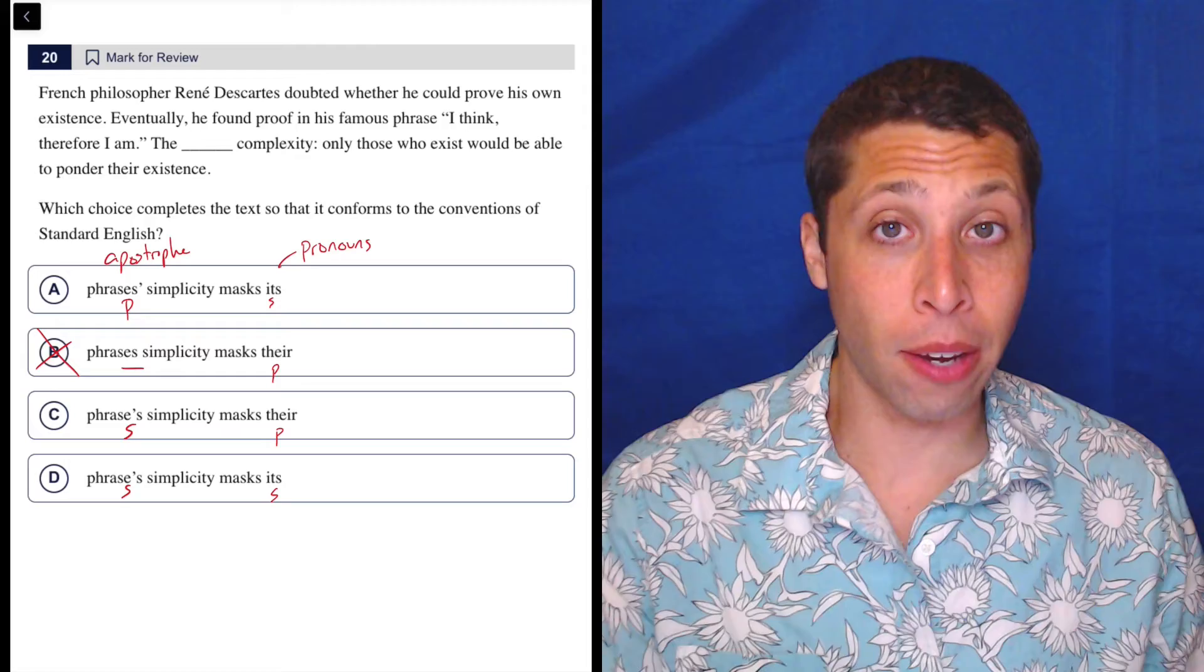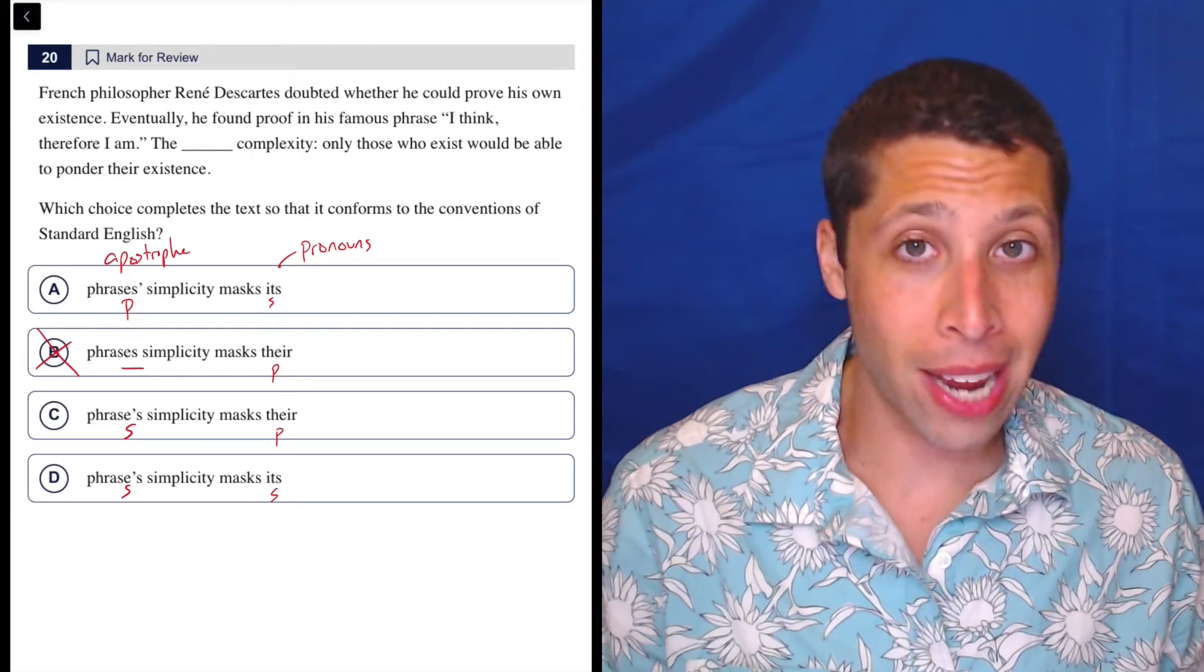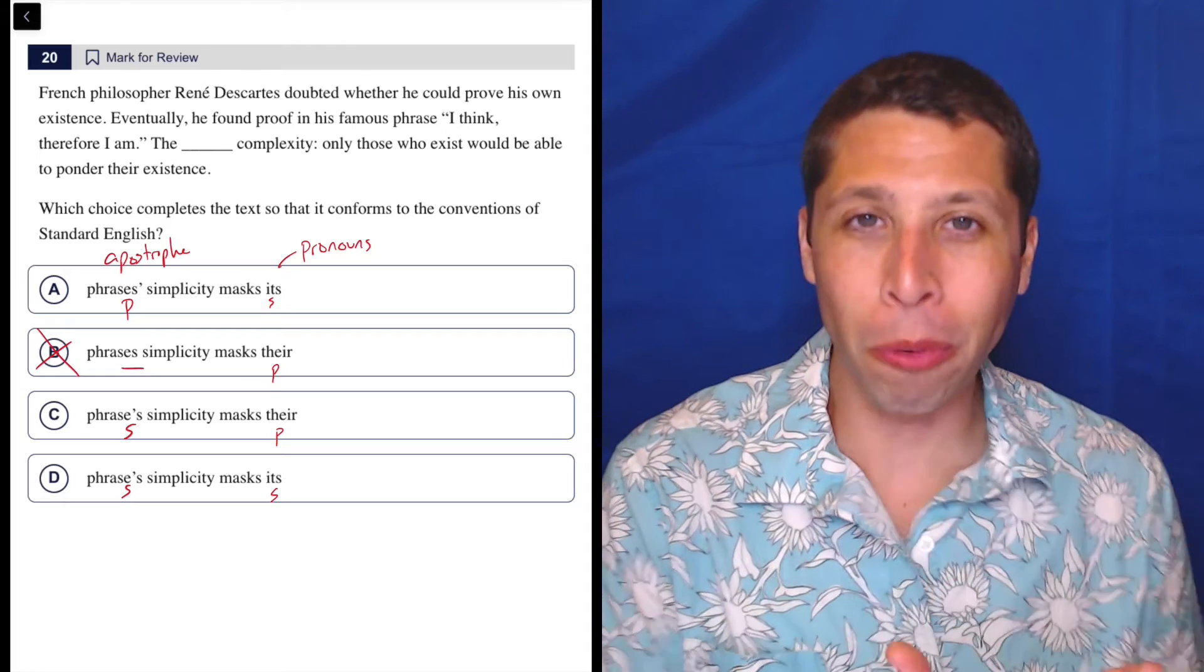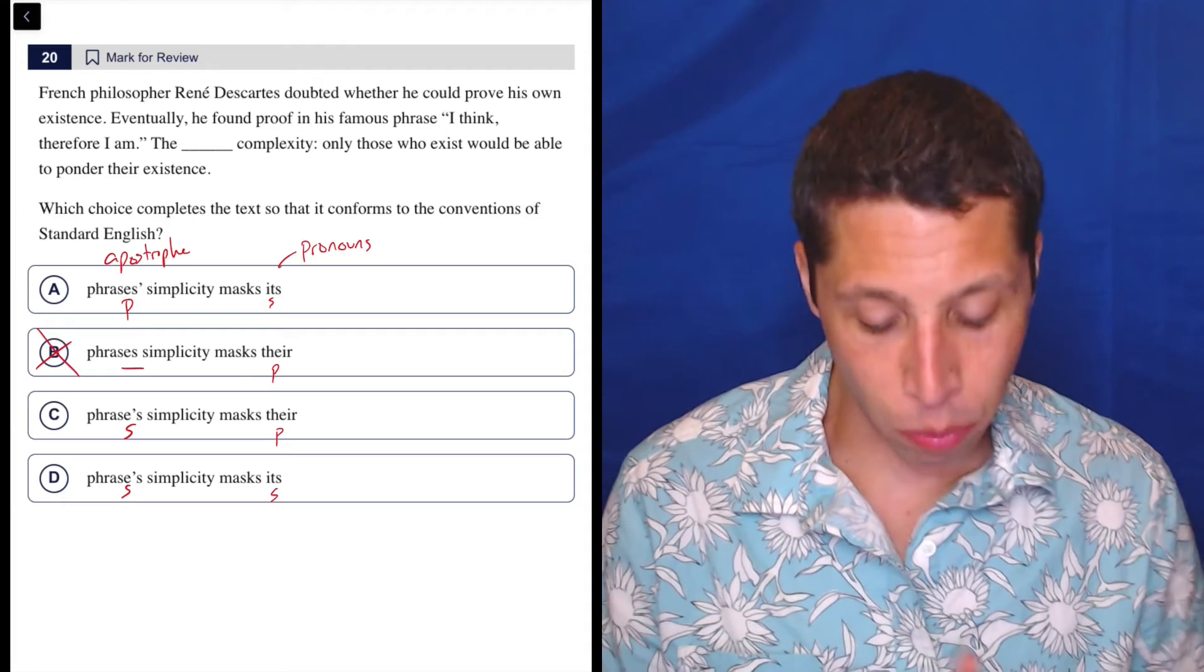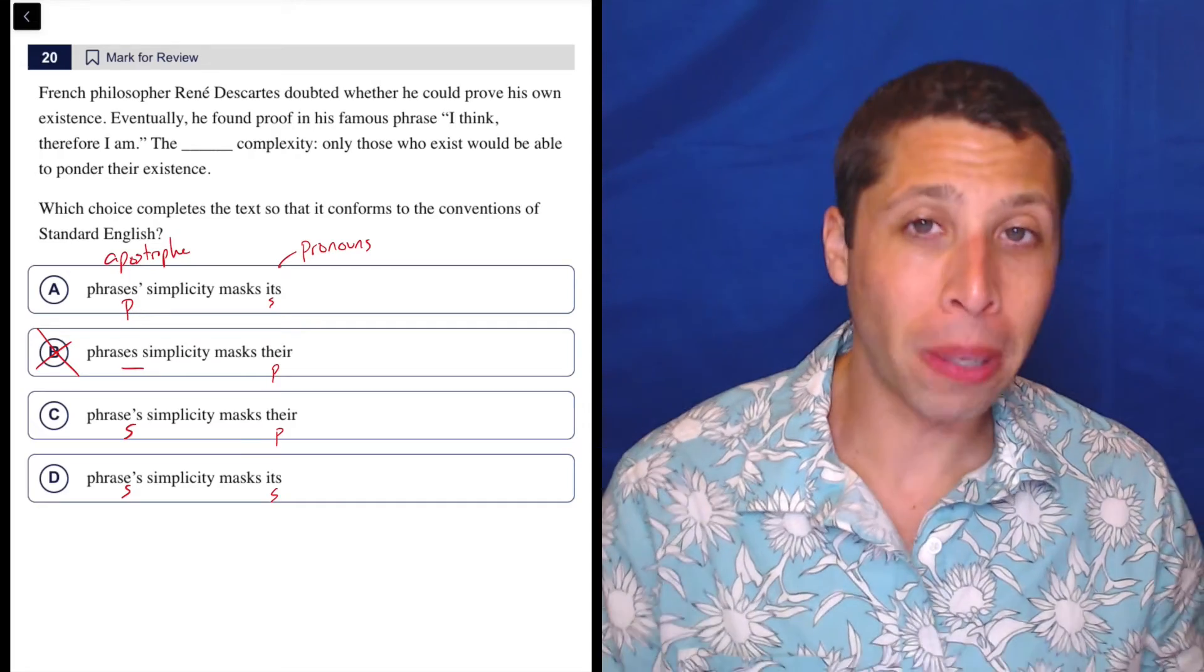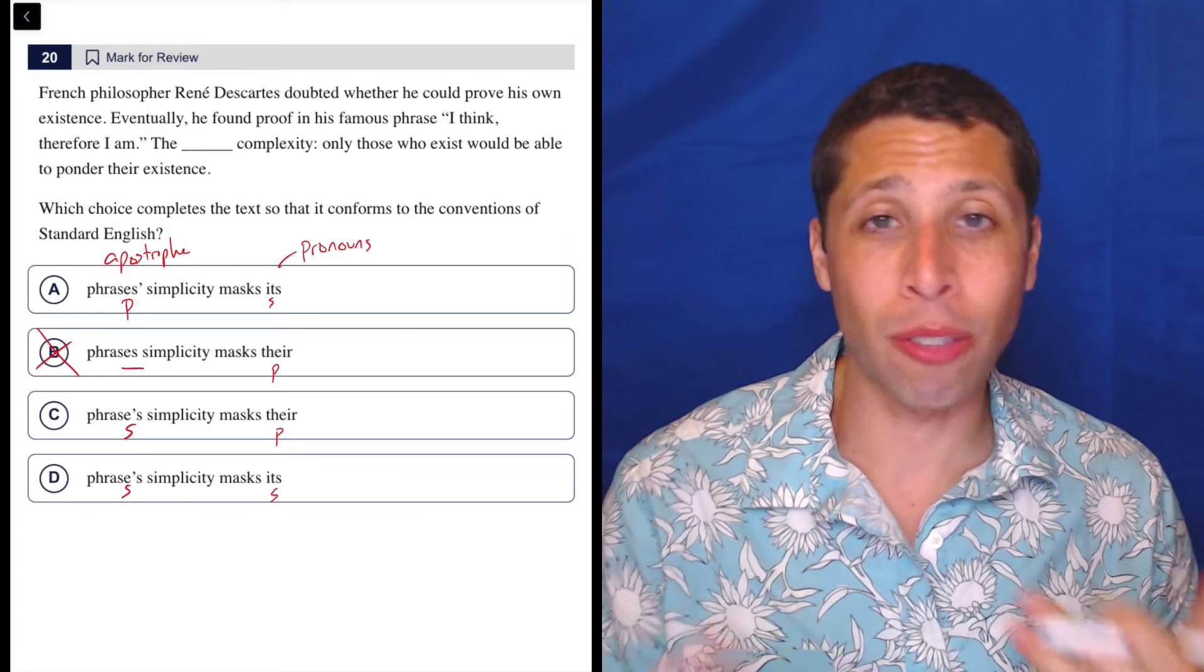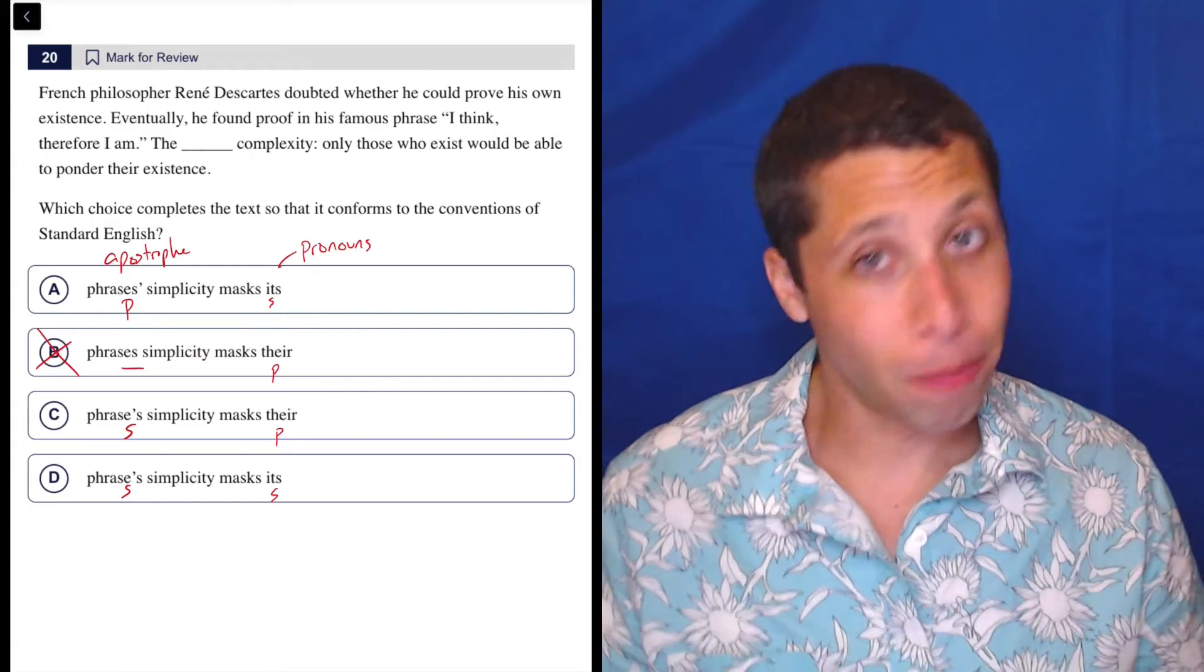From this point, it's really just like they need to match because the pronoun is referring to the phrase. We need to make sure we're referring back to the same thing we started with. In choice A, we have the plural phrases being replaced by the singular pronoun it's. That doesn't make any sense. We're going from a plural to a singular, no good.